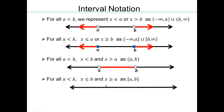Same thing, except now a and b are included — so everything in between with a and b included. That's what the closed bracket version means.